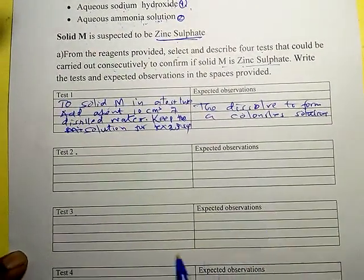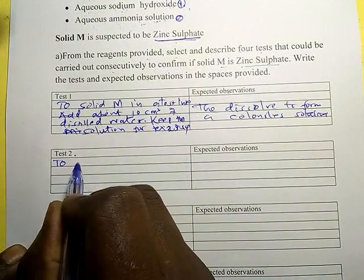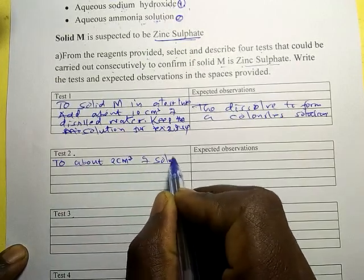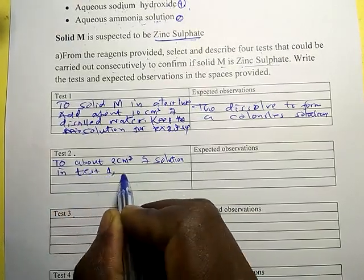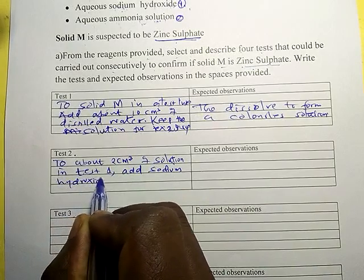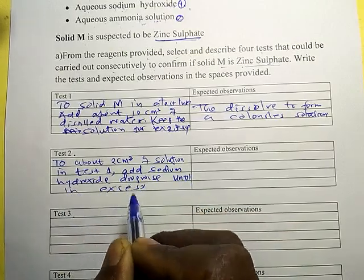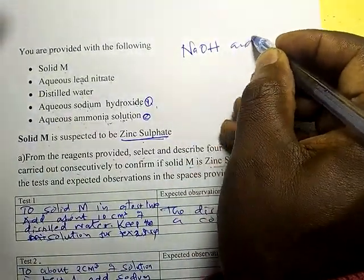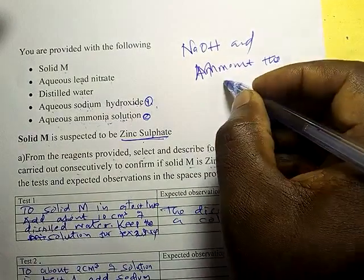Now we have a solution. Test 2: to about 2 cm³ of solution in a test tube, add sodium hydroxide dropwise until in excess. Remember — it is only sodium hydroxide and ammonia solution that are added dropwise until in excess.